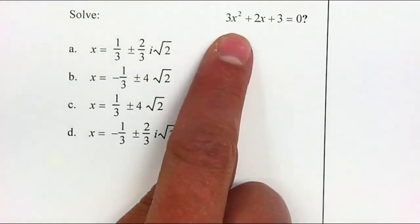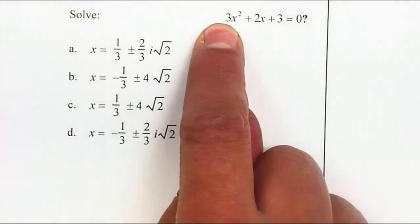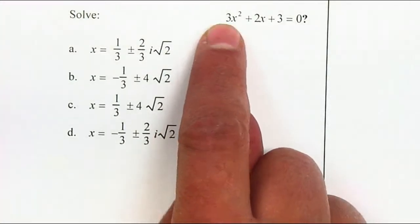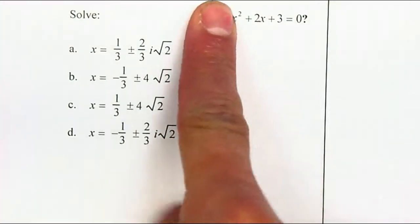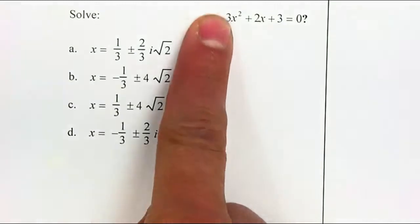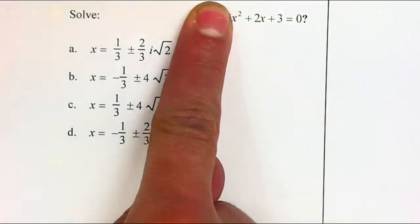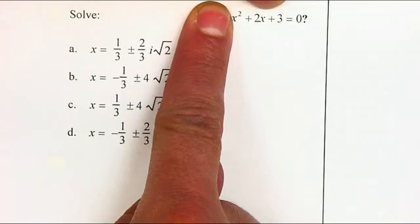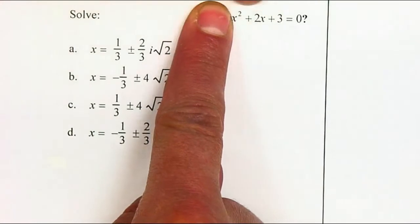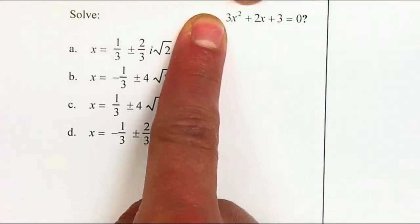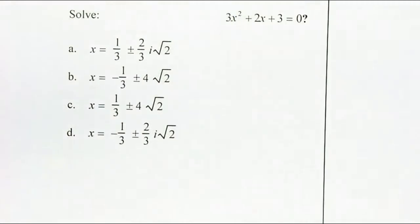We can try completing the square, but because there's a leading coefficient of three, if you have a leading coefficient, you can't complete the square. Now if there was no three here, and since there's a two in here that's even, then we will be able to complete the square. But since we have a three as a leading coefficient, we cannot complete the square.